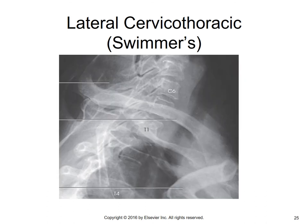Here's a good image of the swimmer's projection. You can see C6, C7 — usually with a clavicle over it — and then T1. Notice the clavicles: one going up and one going down, almost like a wishbone. These are well labeled in your book, so make sure you look at that. Despite superimposition by the clavicles, you'll have the area you're looking for in the center of the image, with good penetration through the shoulder region.